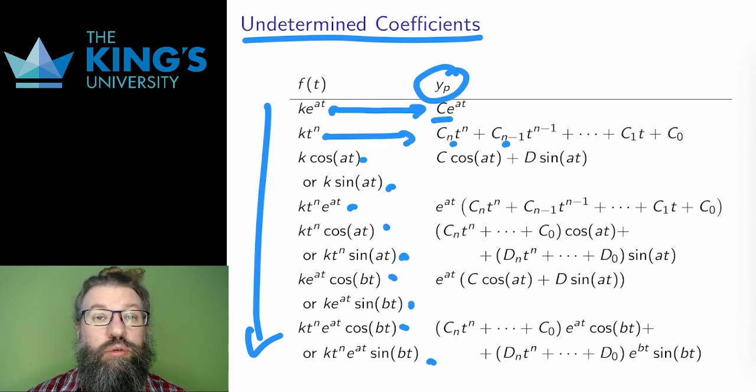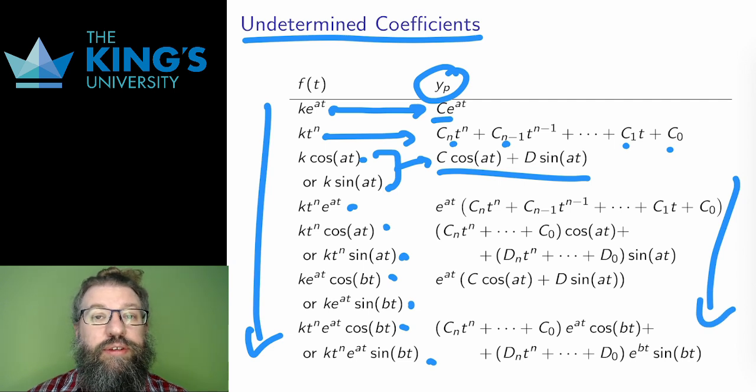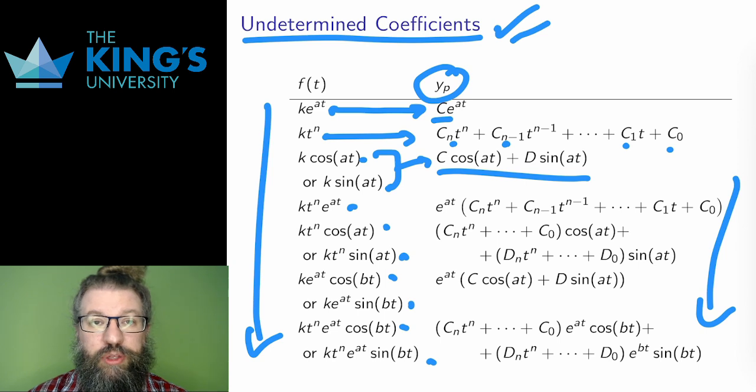This will produce many unknown constants, ci, the coefficients of the polynomial. If the force is sine or cosine, guess some combination of sine and cosine with unknown coefficients c and d. The rest of this table is more complicated versions of the same idea, guess the same kind of function. All these guesses have unknown constants in them. These unknown constants are the undetermined coefficients that give the method its name. Finding the particular solution just boils down to determining these undetermined coefficients.